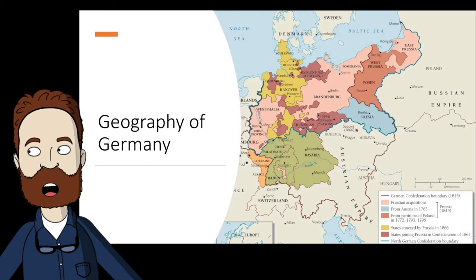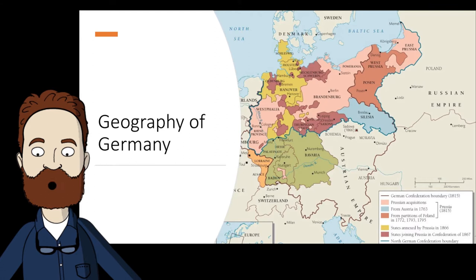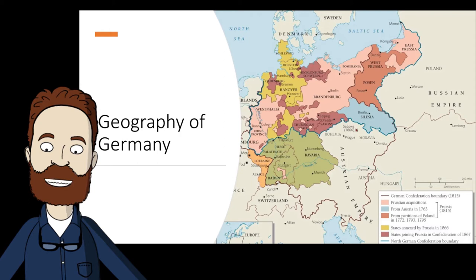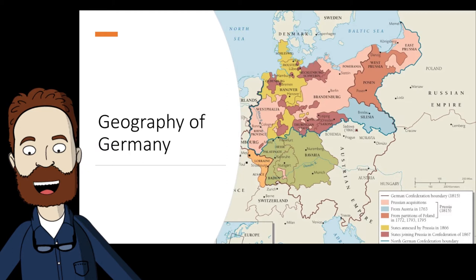Germans saw themselves really connected to their region. The Rhine is not a focal point either. During barbarian times, this was the dividing line between the Roman world and the Germanic world. Only recently, in the 18th and 19th century, did this become romanticized.